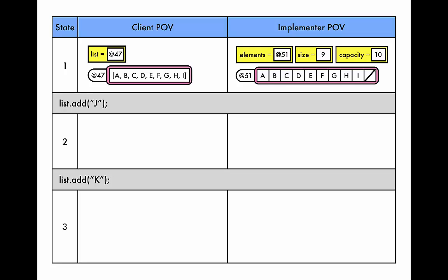Okay so the stage is set. Now we want to add J to the end of the list. From the client's perspective this is easy. In fact we've done this earlier in the module. We're just going to add J to the end of the list object and we're done. The list variable is going to be unchanged. It still holds the same reference.